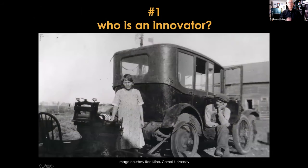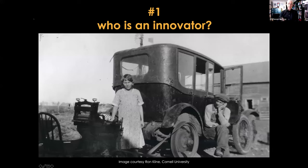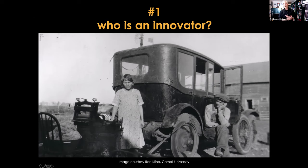Not only is our picture of what innovation is kind of wrong, but we also have a distorted view of who's doing all of this innovating. This is one of my favorite images from the history of technology. Here we've got two people in Kansas during the early years of the Great Depression who did something unconventional with their car. With the rear tire removed and a drive belt added, they built, in essence, a car-powered washing machine. They innovated — or if I were a speaker at a TED talk, I might say they hacked the automobile.